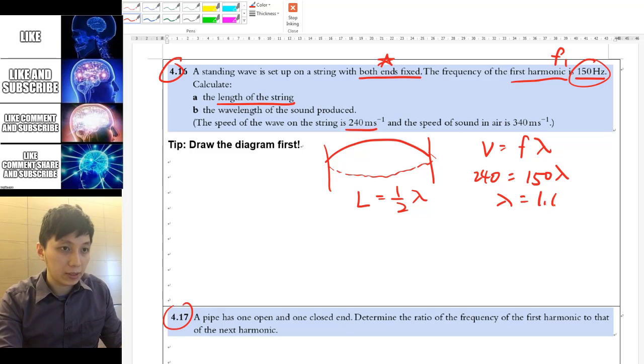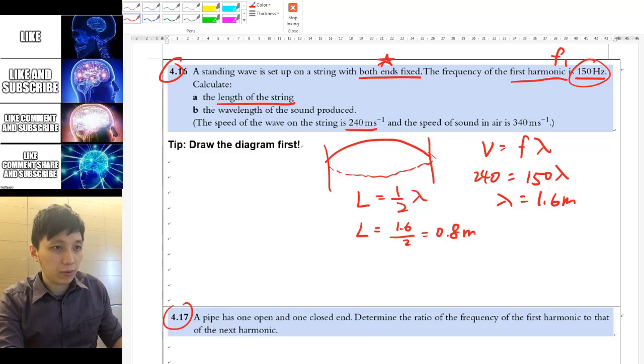And we can find the wavelength to be 240 divided by 150, which is 1.6 meters by checking the unit. And therefore the string is going to be 1.6 divided by 2, which is 0.8 meters. That's the answer for part A.